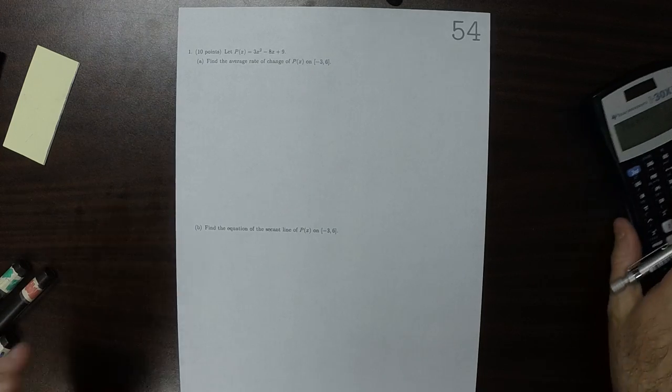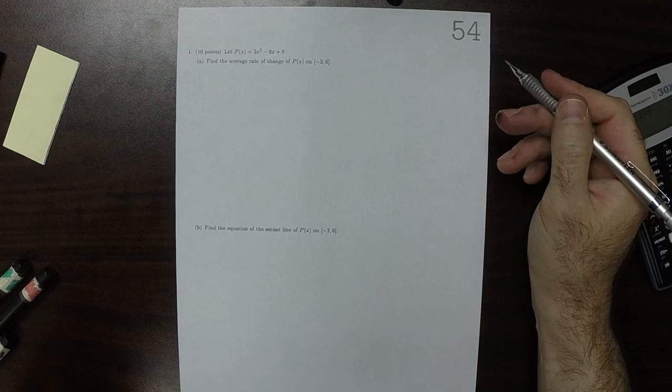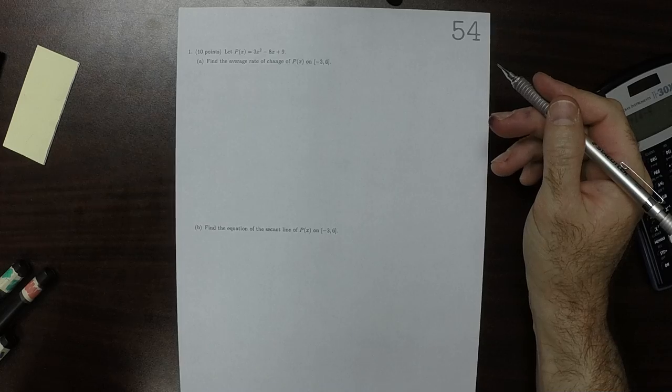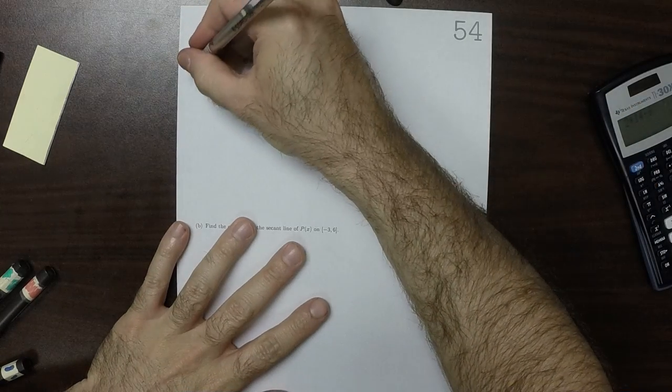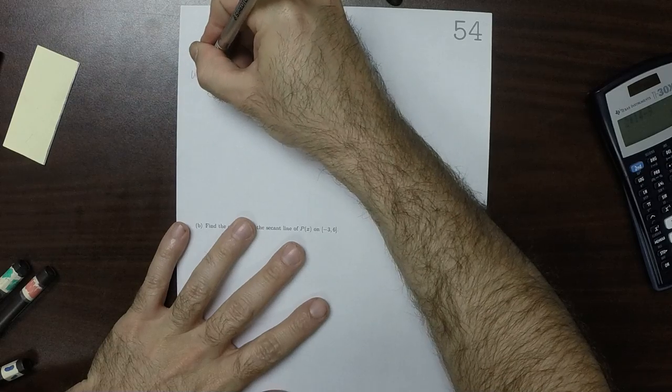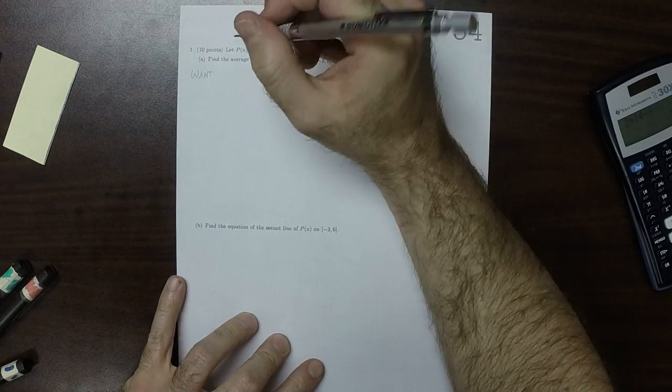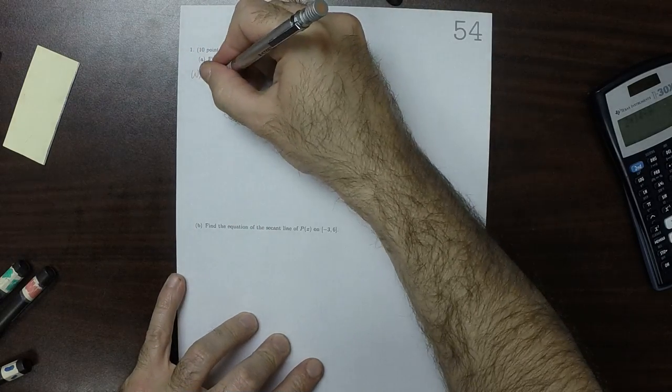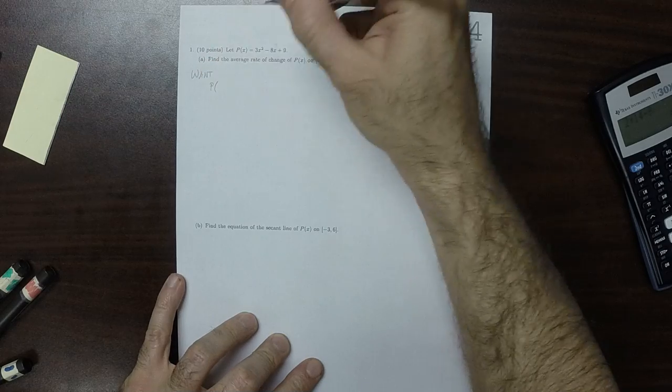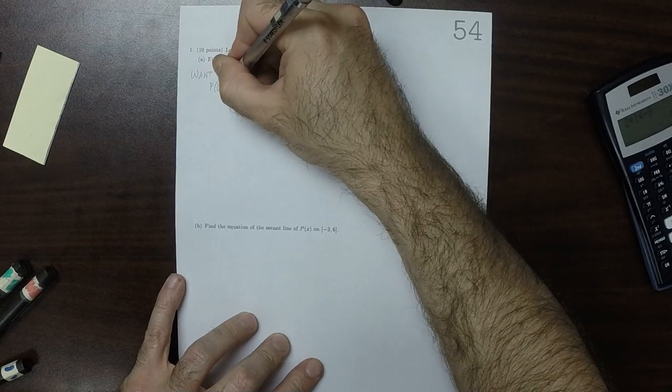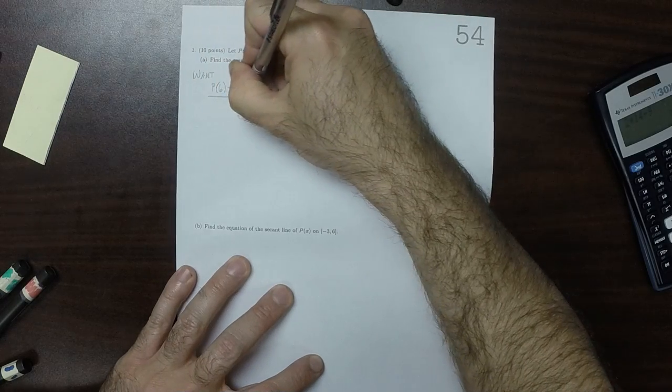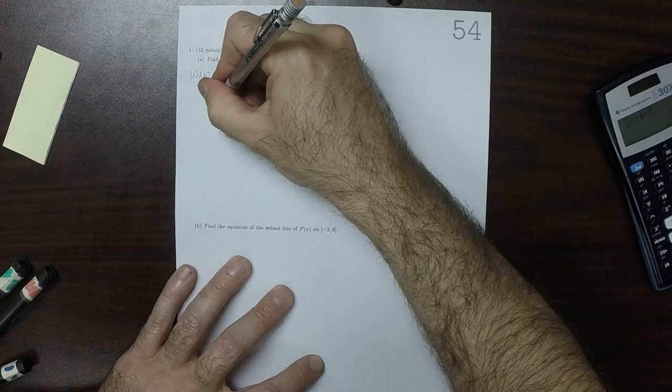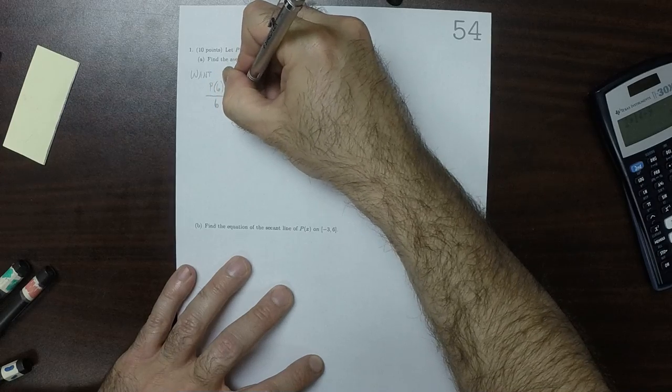This is the solution to written homework 54. So then what we want is p evaluated at 6 minus p evaluated at negative 3, divided by 6 minus negative 3.